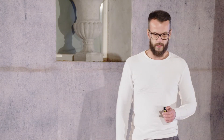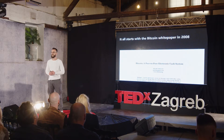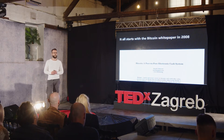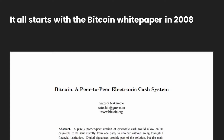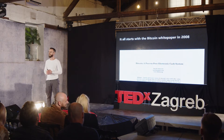It all started 13 years ago, in 2008, with a little white paper by a pseudonymous cryptographer named Satoshi Nakamoto. Nakamoto, on nine pages, described the building blocks of this next generation of internet applications. He described some technologies that will transform the internet and all the applications that we're using.